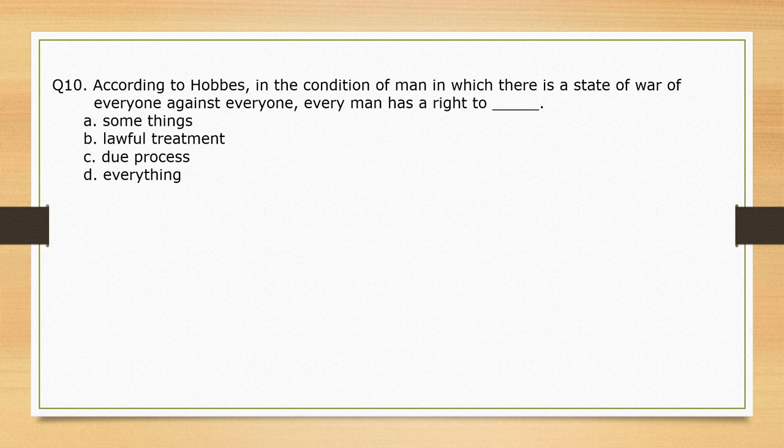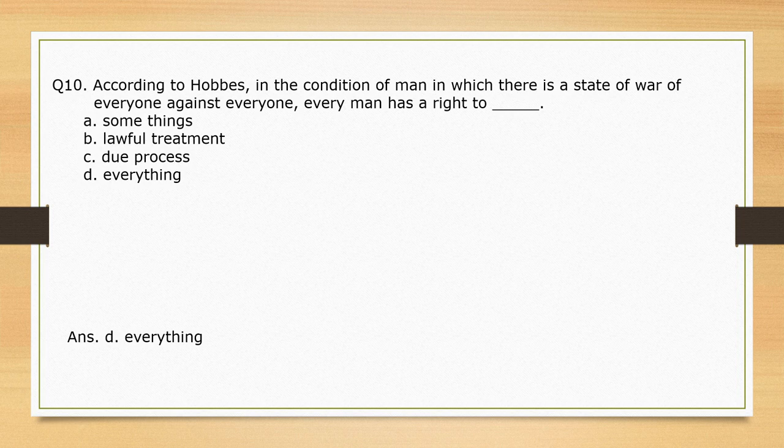According to Hobbes, in the condition of man in which there is a state of war — or everyone against everyone — every man has a right to: options: some things; lawful treatment; due process; everything. The correct option is option D: everything.